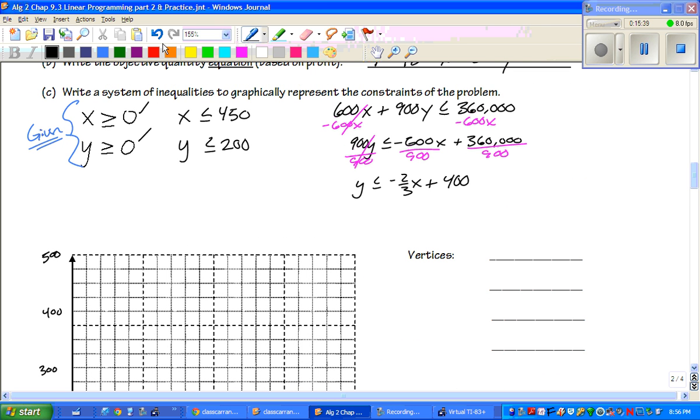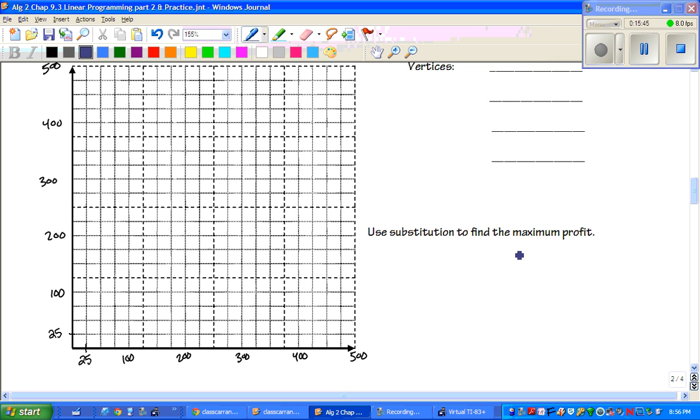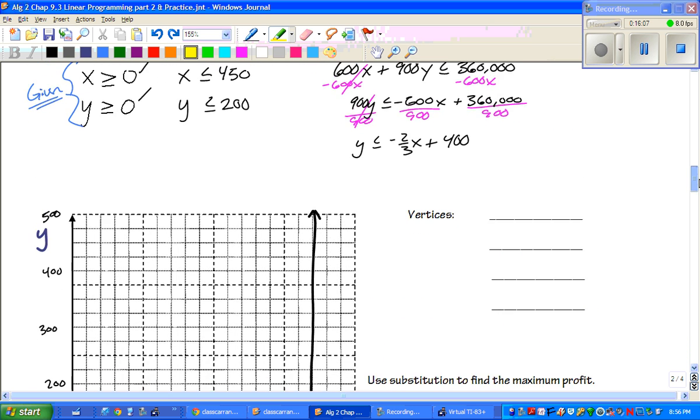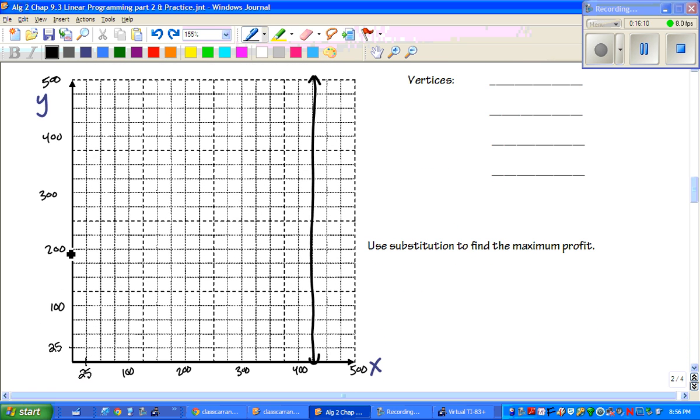The first two are already graphed. So, X is less than or equal to 450. Remember, which one's your X and which one is your Y. So, X is less than or equal to 450. There's your line. And that's everything less than that. I'm not going to worry about that right now. Now, Y is less than or equal to 200. I'm going to go to 200. Draw my line. And now, it's less than that. So, that's where our answer is so far. But we still have one more line to graph.